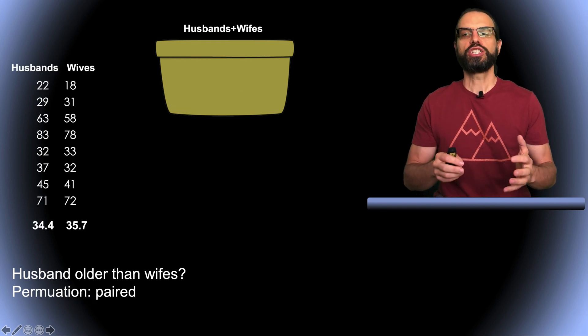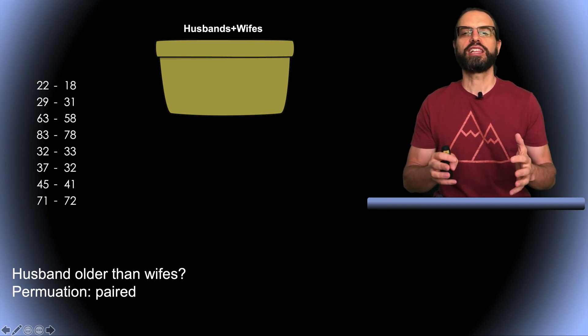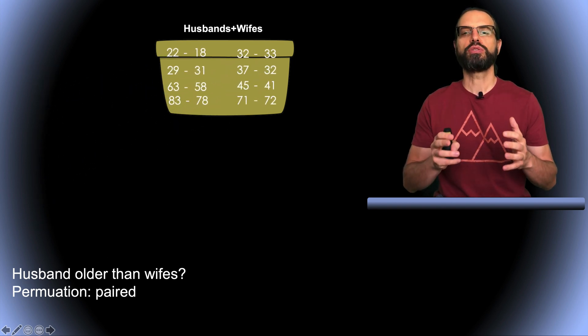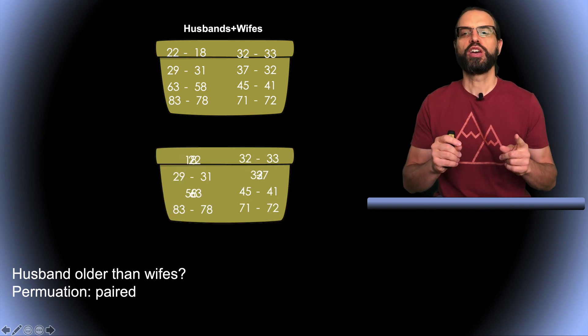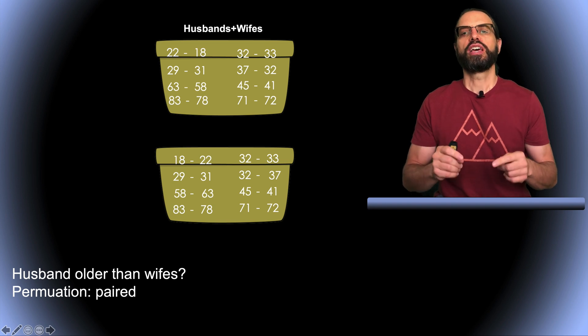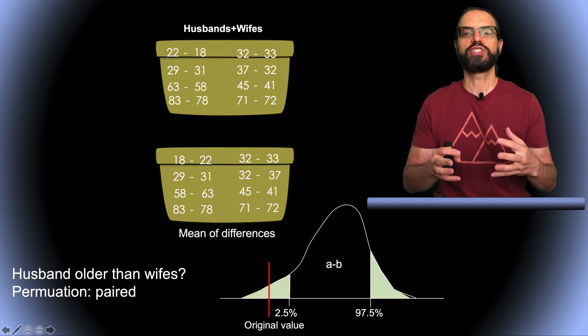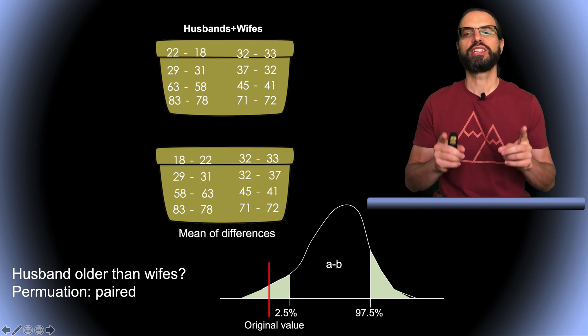For permutation, again, we put all the difference values in the big bucket, but for each iteration, we randomly permute the sign of some of the differences. We take the average of these values to build the null distribution. Then we conclude that there is a significant difference if the original unpermuted difference lies in the tail of the null distribution.